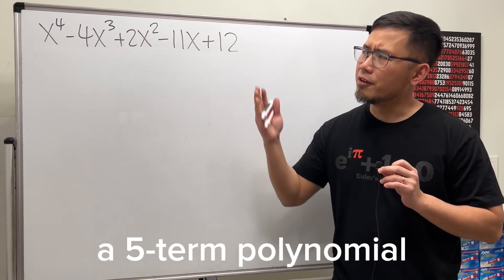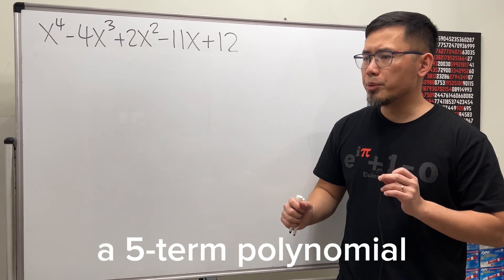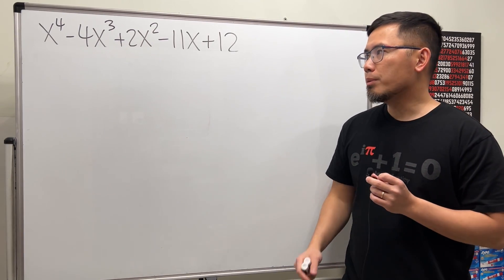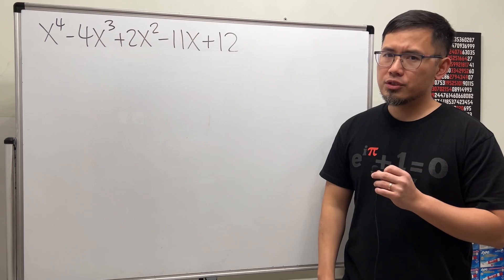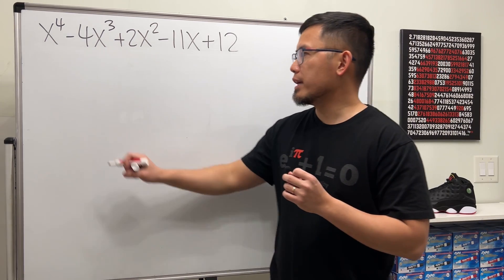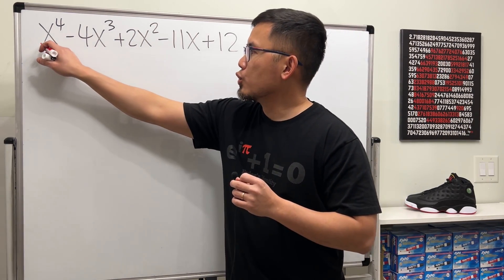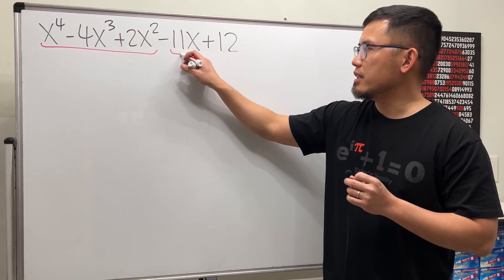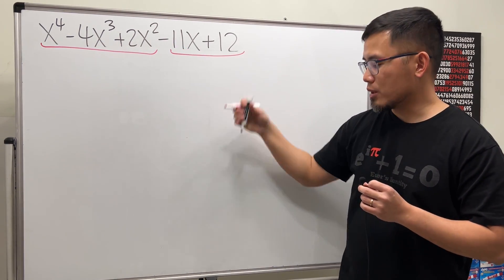So how do we factor a five-term polynomial by grouping? Well, by grouping. So maybe let's go ahead and try grouping the first three terms and then the last two terms.